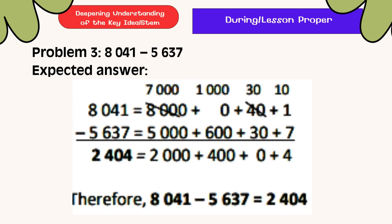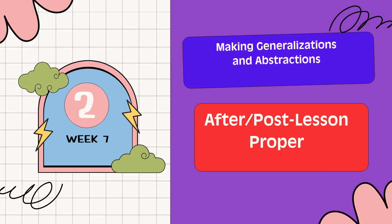Problem 3: 8,041 minus 5,637. Here is the expected answer. Look at the illustration or picture for your reference. The difference of 8,041 minus 5,637 is 2,404.